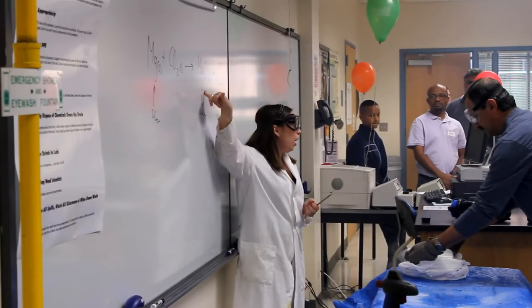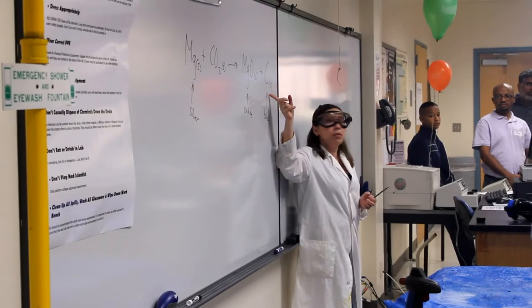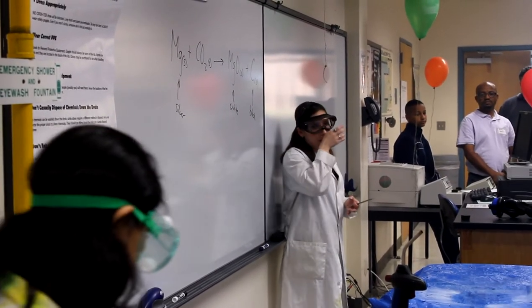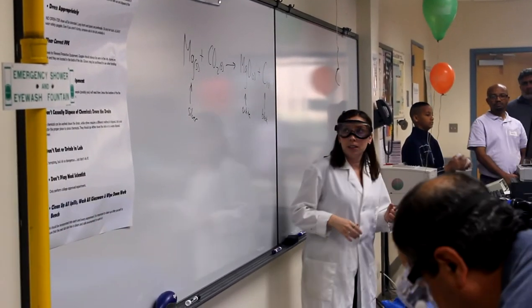So it turned into magnesium oxide when it reacted with the oxygen and that's the white that you see. And it made some just black carbon and that's the black that you see. So it completely converted everything into different things. That's what we call a redox reaction or a single replacement reaction.